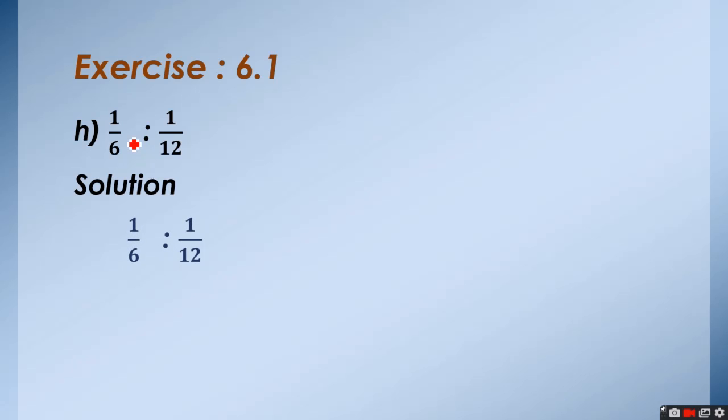Solution. Write the question as it is. Now, in second step, when we have ratio in a fraction form, we change this sign into the multiplication sign and reciprocal the second fraction.